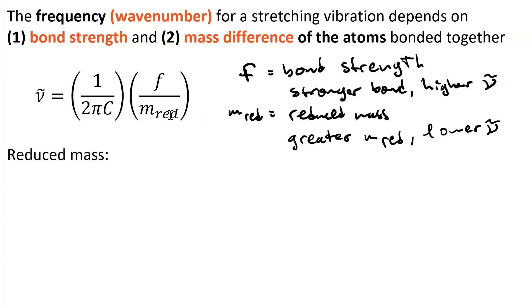Reduced mass is in the denominator. The greater the value of reduced mass, the lower your wavenumber. How is reduced mass calculated?